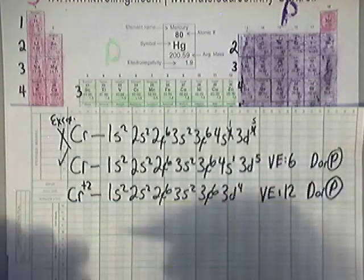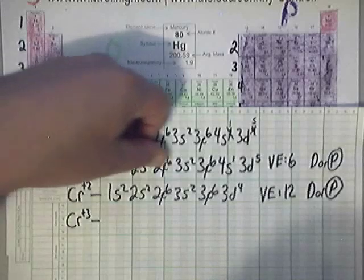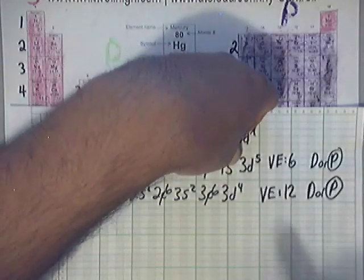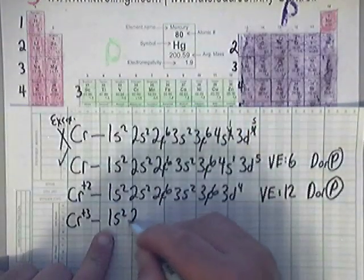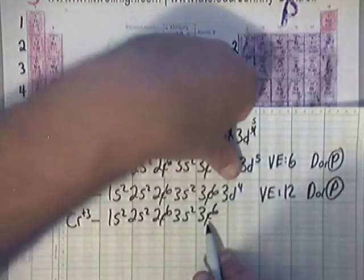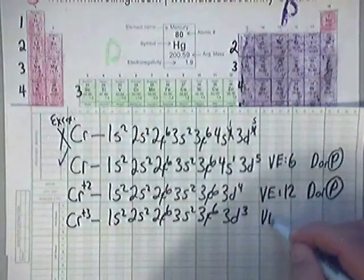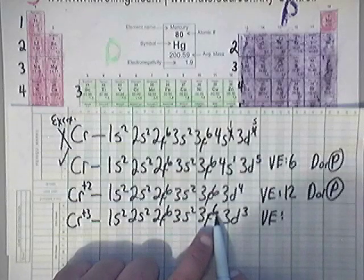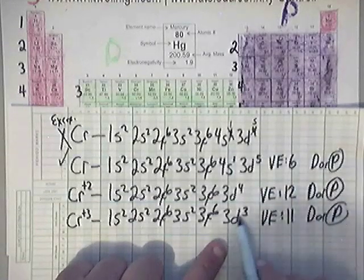Now let's do another one of chromium. Another common ion of chromium is Cr+3. You've got to throw away three valence electrons. Look back at the correct way of writing chromium. If you throw away the 4S1, that's just one electron, so you need to throw away two more from the 3D5, making it 3D3. So that would be 1S2, 2S2, 2P6, 3S2, 3P6, then 3D3. Valence electron count: 2 plus 6 is 8, and 8 plus 3 is 11. Paramagnetic or diamagnetic — still paramagnetic because the D orbital is partially filled.